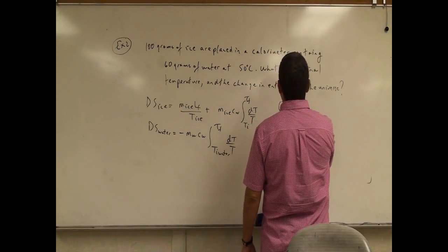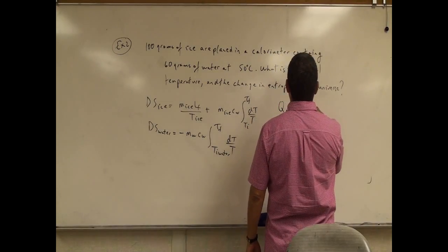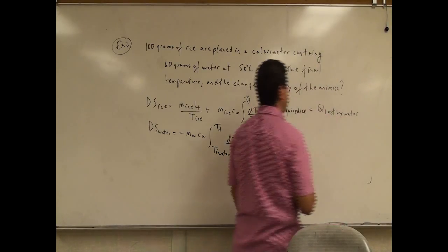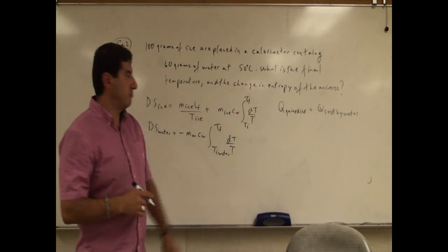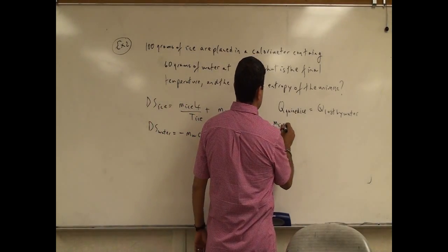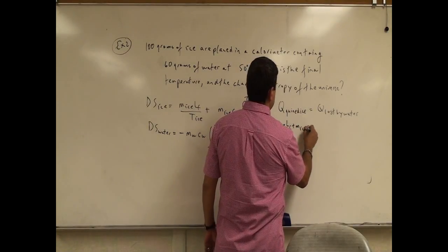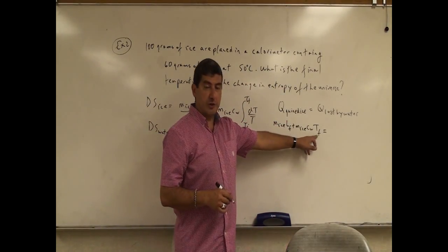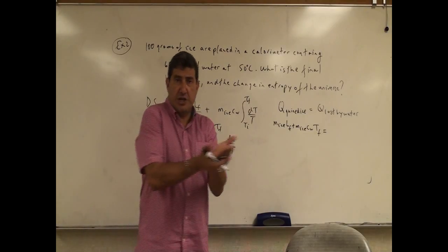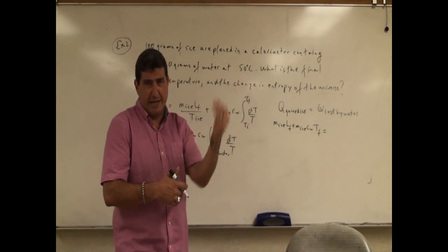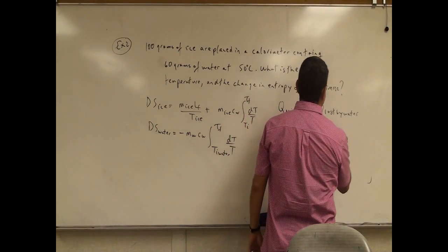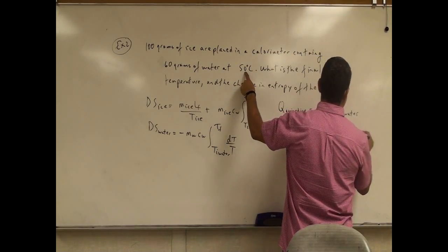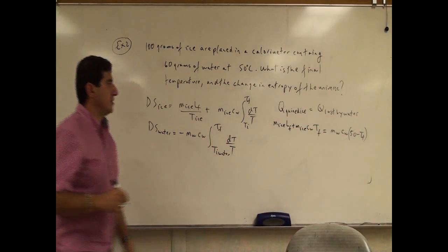The heat gained by the ice must equal the heat lost by the water — just a regular exchange of heat calorimetry problem. So the mass of the ice times the heat of fusion of ice, plus mass of ice times specific heat of water times the final temperature. Remember that the initial temperature of ice when it melts is zero, so the change in temperature is the final temperature minus zero. And the heat lost by the water is the mass of the water times the specific heat of water times (50 minus T final).